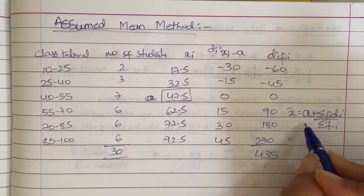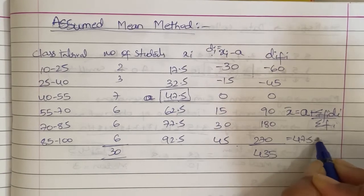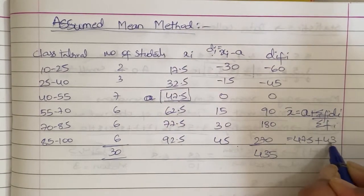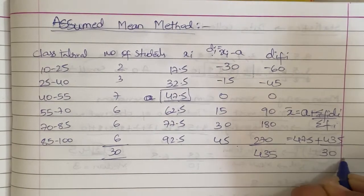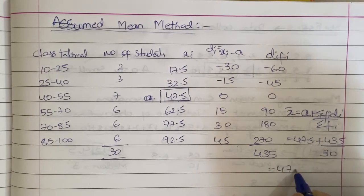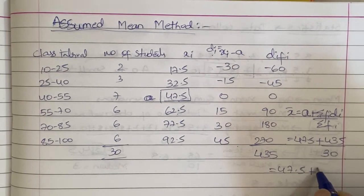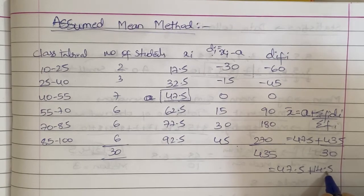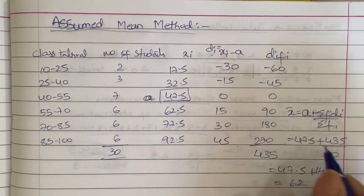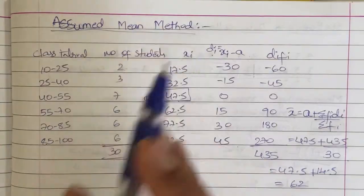Now we will do di into fi. So this is di into fi: minus 60, minus 45, 0, 90, 180, 270. This total we will get 435. Now what is the formula for finding the mean? In this case, mean x bar is equal to a plus sigma of fi di by sigma of fi. So answer which is a is 47.5, plus sigma of fi di, 435, sigma fi is 30. So what we get is 47.5 plus 14.5, which is equal to 62. So 62 is the mean of this distribution table we get from the assumed mean method.